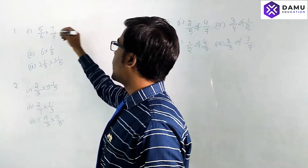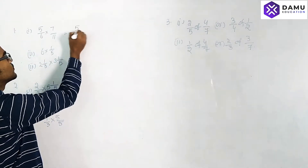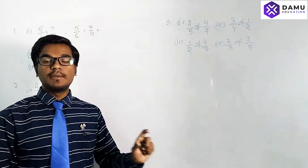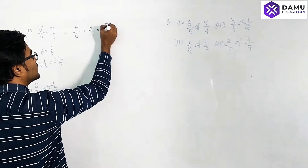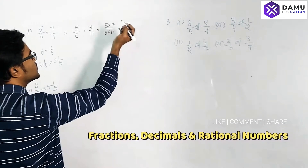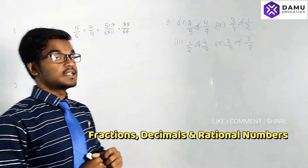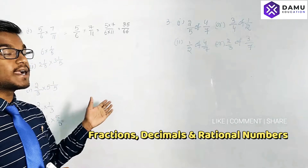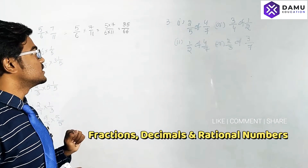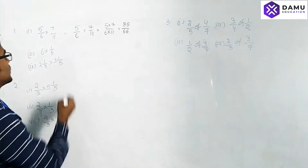Multiplying numerator with numerator and denominator with denominator. So here: 5/6 into 7/11 — numerator times numerator and denominator times denominator gives 35 by 66. Is there any simplification possible? No, it's not possible. This is a proper fraction so we cannot write it as a mixed fraction. So 35/66 is the answer.